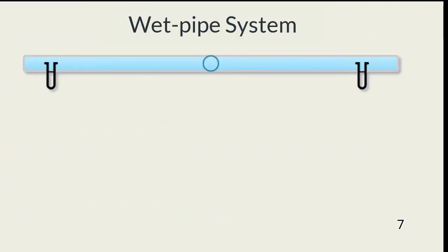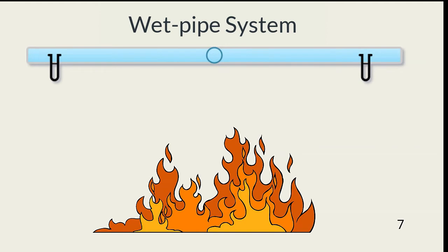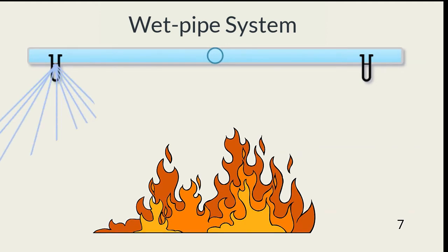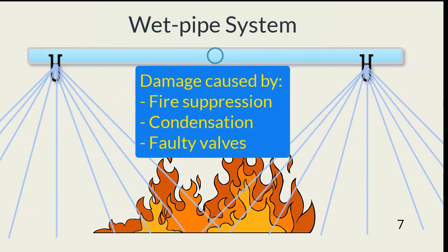Wet pipe systems are the most commonly used. The pipes leading to ceiling valves are always filled with water. When a fire causes the valves to experience a certain level of heat, the valves open. The advantages of wet pipe include low cost for installation and maintenance; they're also highly reliable and only release water closest to the fire. The problem with wet pipe is the damage water does to computer equipment. Damage can be caused by the actual release due to fire, pipe condensation, or a defective valve.